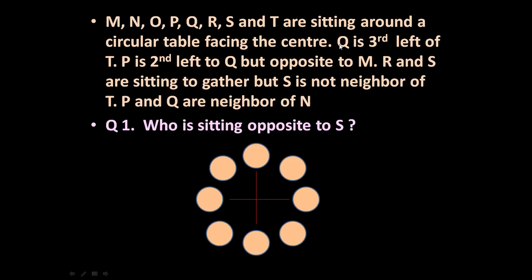Now let us put the given information into this format. The first clue is: Q is third left of T. Since this is a circular table, you can start from any point. Fix the position of T, and since Q is third left of T — this is the left of T, and this is the right of T because T is facing the center — counting 1, 2, 3, Q occupies the third left position.